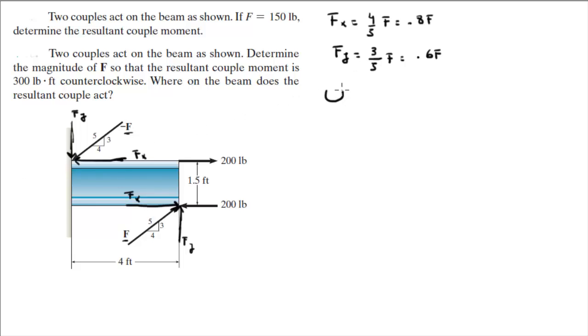So sum of the moments is equal to f_y times 4, because that's the distance between the two f_y's. And it's positive because it's counterclockwise, plus f_x times 1.5, because that's the distance between the two f_x.